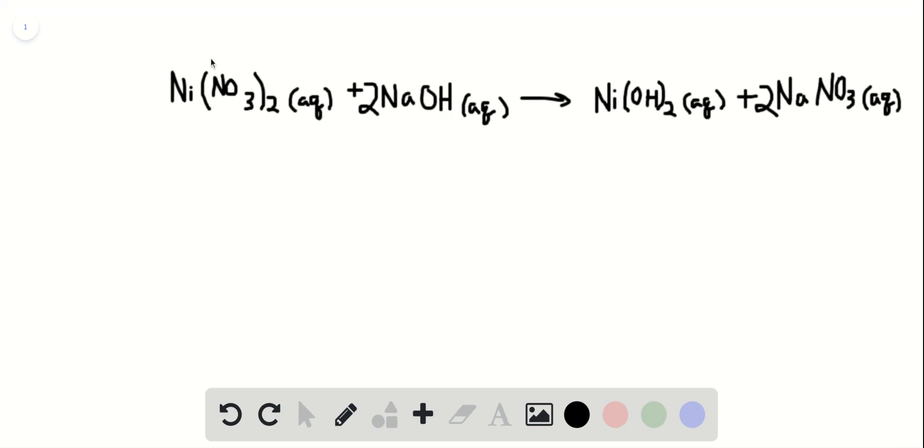We have nickel nitrate, nickel-2 nitrate reacting with sodium hydroxide to form nickel-2 hydroxide and sodium nitrate. This was incorrect - this is actually insoluble because this is precipitating. And this is the balanced equation here.